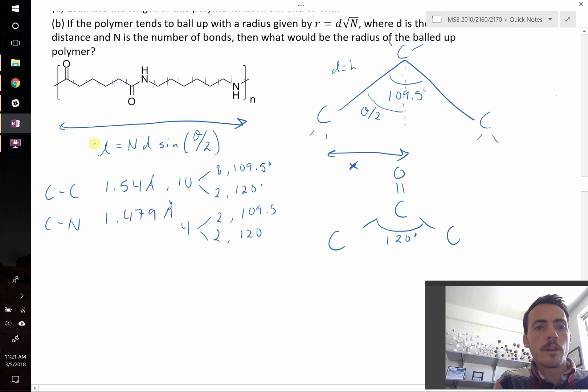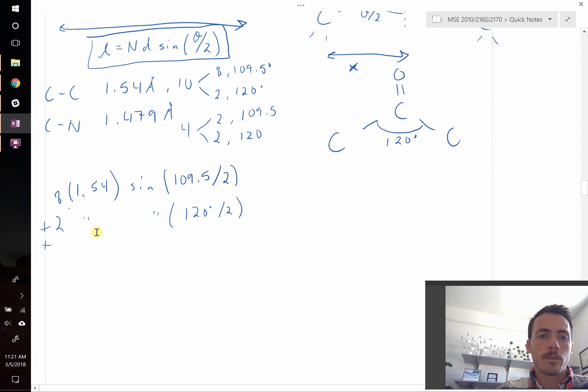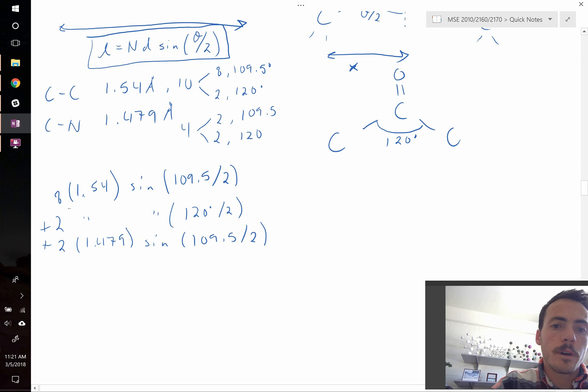So now, what we're going to do is we're going to plug in this formula right here, we're going to plug in 4 versions of that for the 4 different types of bonds and bond angles that we have. So let's go ahead and do so. So we have 8 times 1.54 multiplied by the sine of 109.5 divided by 2 plus 2 with the same exact thing except for it's going to be 120 degrees divided by 2 plus, let's give ourselves a little more room. We're going to have 2 times 1.479 times the sine of 109.5 divided by 2 plus the same thing, but with 120 degrees.